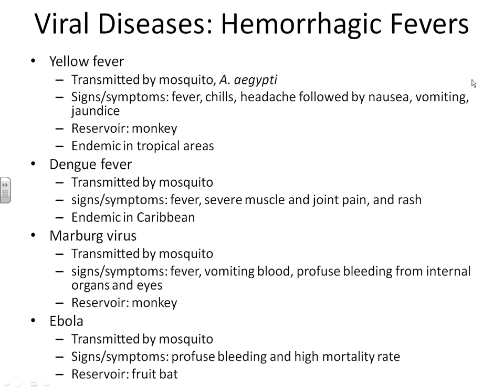Our first viral diseases belong to a group known as the hemorrhagic fevers. Hemorrhagic fevers are typically characterized by extremely high fevers and often uncontrolled bleeding in some area of the body.